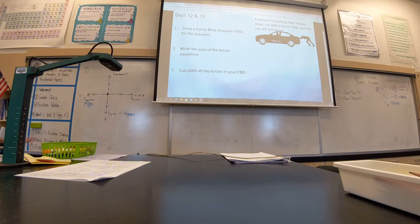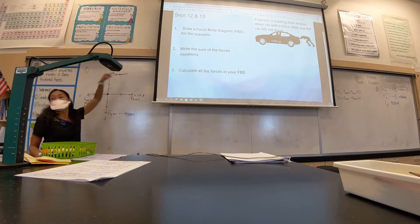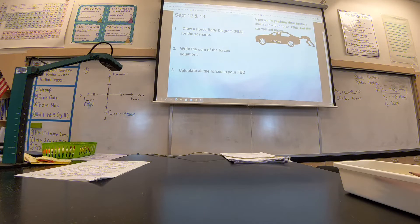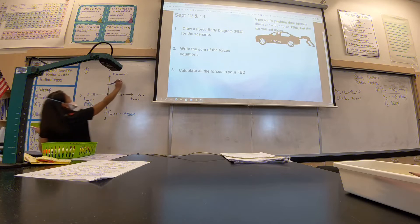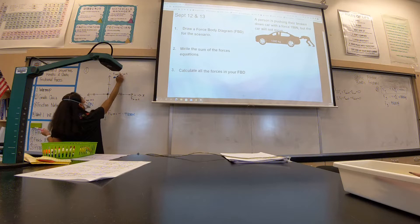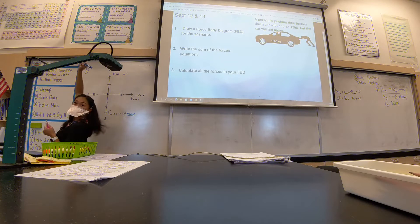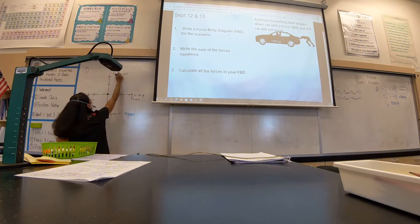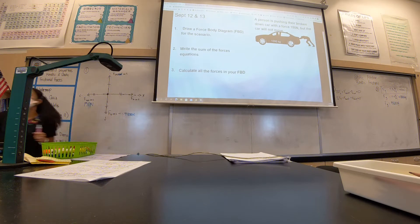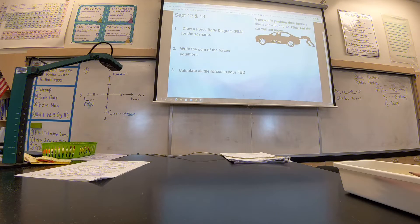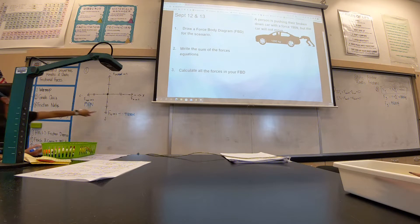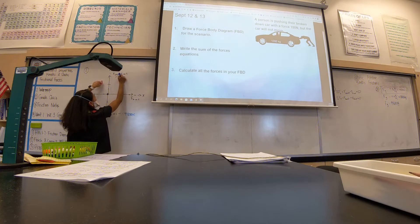If my force of gravity is negative 9800 newtons, what's my normal force? I found an error — it's not the force of the hand but the normal force. What's creating the normal force? The ground. So you can call it ground or road. If my gravitational force is 9800 newtons, what is the normal force? Right — if the sum equals zero, the normal force must be positive 9800 newtons.